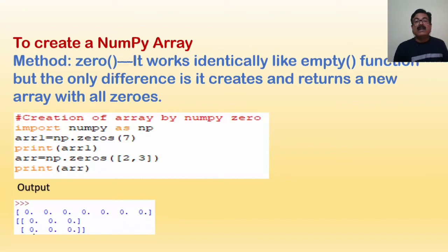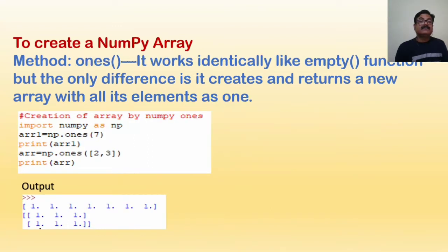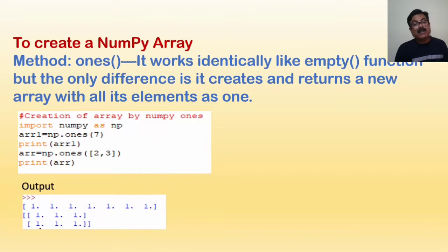The zeros method works like the empty function, but the only difference is it creates and returns a new array with all zeros. You can see the 2D zero array and the 1D zero array. Next is the ones method — it works similarly but creates and returns a new array with all elements as one. A 2-by-3 array and a 7-element array of ones have been created using np.ones.